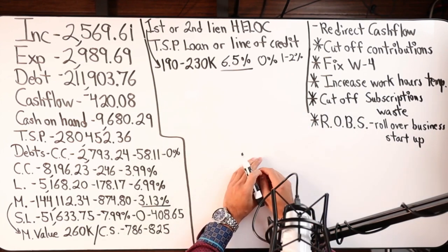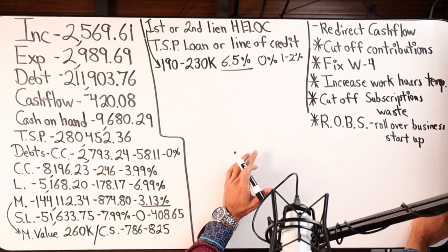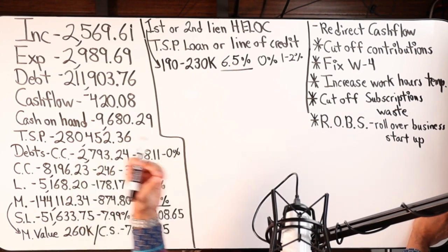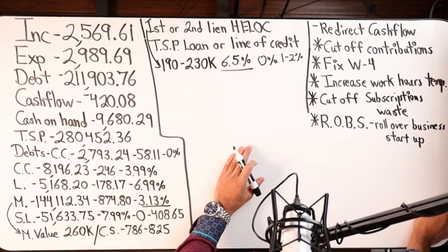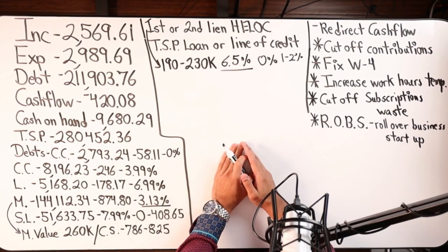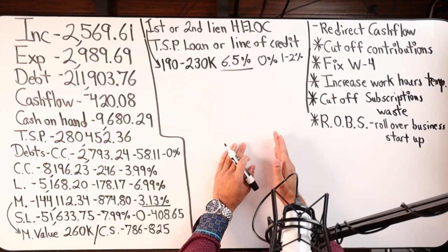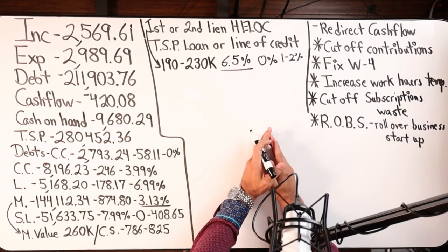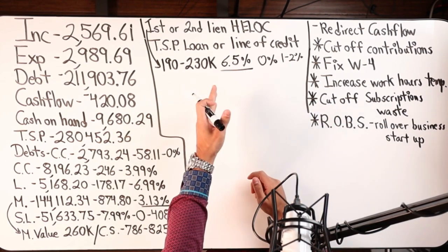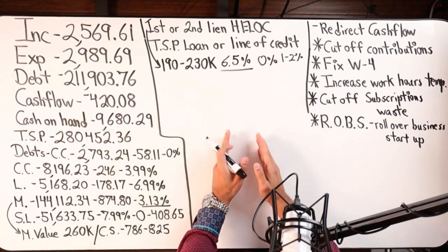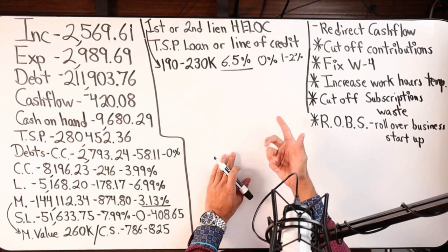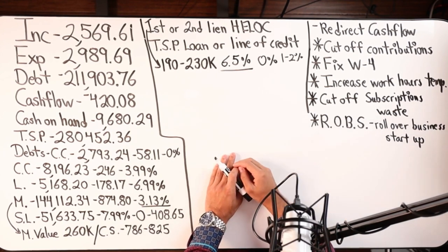Same thing with your paychecks — if you're an employee you can fix your W-4 to control how much you're giving to the IRS each paycheck. The goal is to have no refund at the end of the year and not owe any tax either — just flat. When you do that, you're no longer overpaying the IRS. A refund means you tipped the IRS — you gave them free money and they didn't do anything for you.